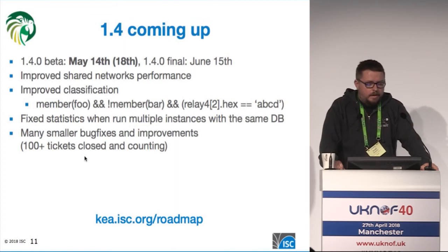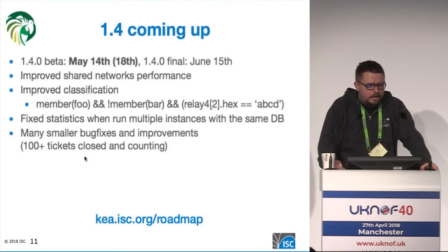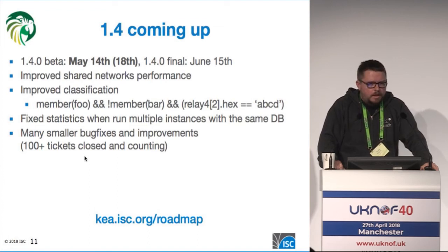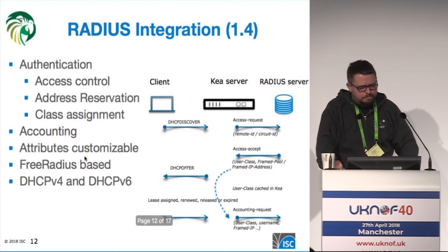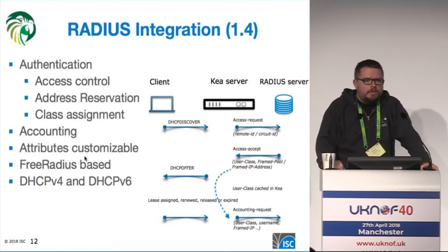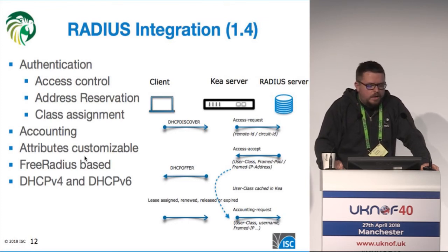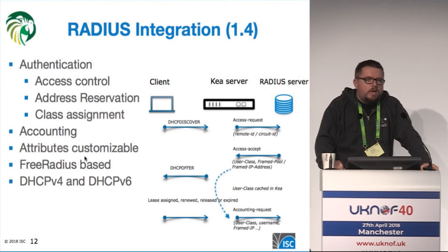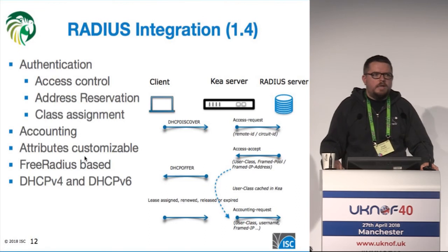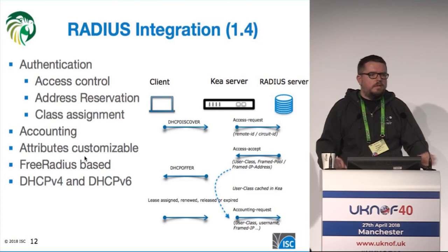Kea 1.4 is coming up on May 14th, give or take a couple of days. We have improved shared network performance, done a couple of tweaks in classification, fixed statistics when running multiple Kea instances connected to the same database, and fixed and improved lots of different things — there are over 100 tickets addressed. It's also worth mentioning that we are now working on RADIUS integration, so you can integrate your DHCP server with RADIUS and use it for access control, for address reservation, or for classification so that a client belongs to a certain class and gets a different type of service.